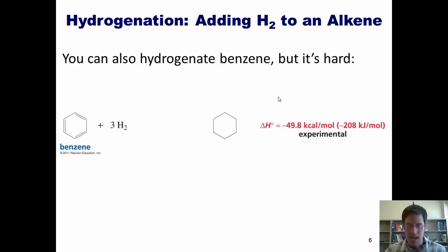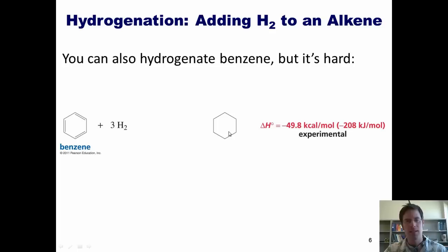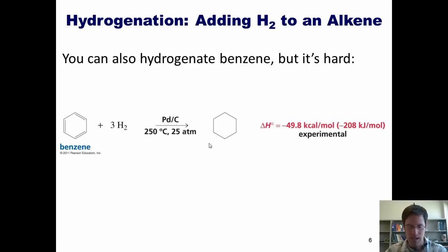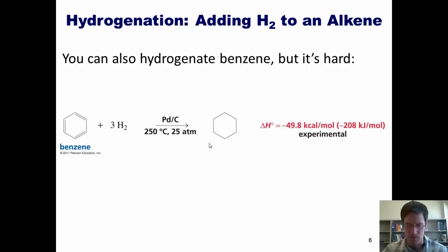You can also hydrogenate benzene, reducing it to cyclohexane, but it's really hard. Because of benzene's stabilizing aromaticity, this reaction has to be done at 250 degrees Celsius under 25 atmospheres of pressure.